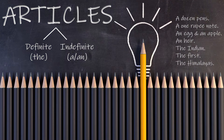Hello kids, today I am going to teach you articles. Articles are words which specify noun. There are two types of articles. First, definite — example: 'the'. Second, indefinite — that is 'a' and 'an'.